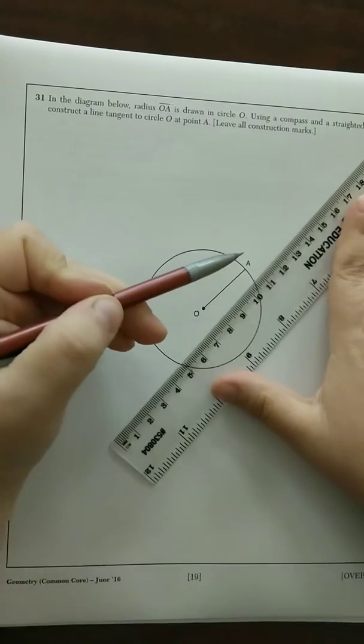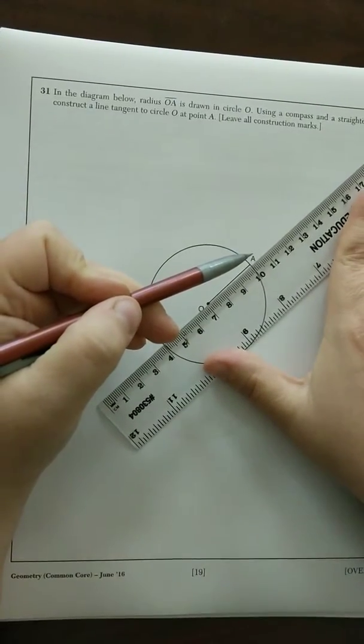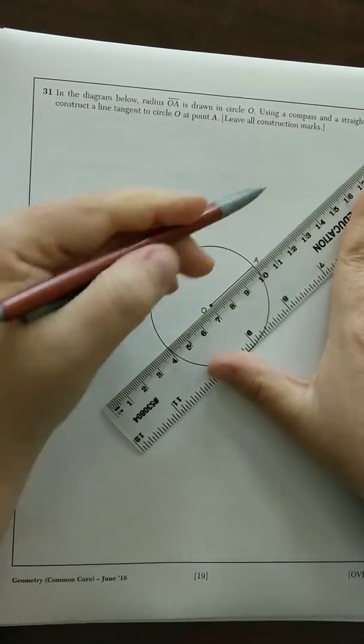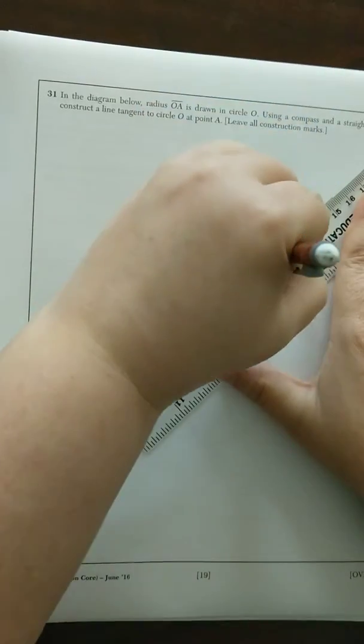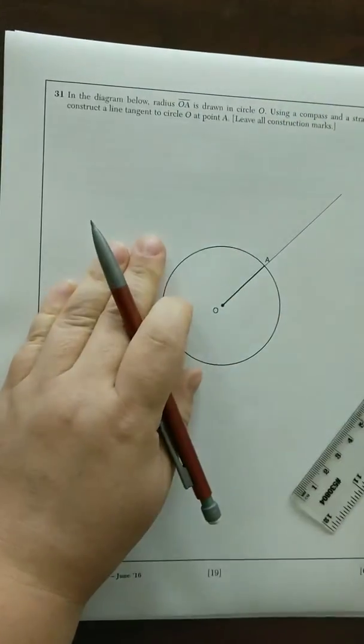In this case, it's going to hit at point A. The first thing you need to do is extend this radius outside the circle. Use your ruler and extend OA outside the circle.